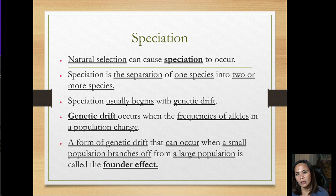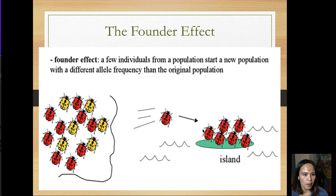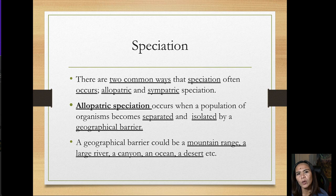A form of genetic drift can occur when a small population branches off from a large population — this is called the founder effect. A few individuals from a population start a new population with different allele frequencies than the original population, as shown in the visual here.